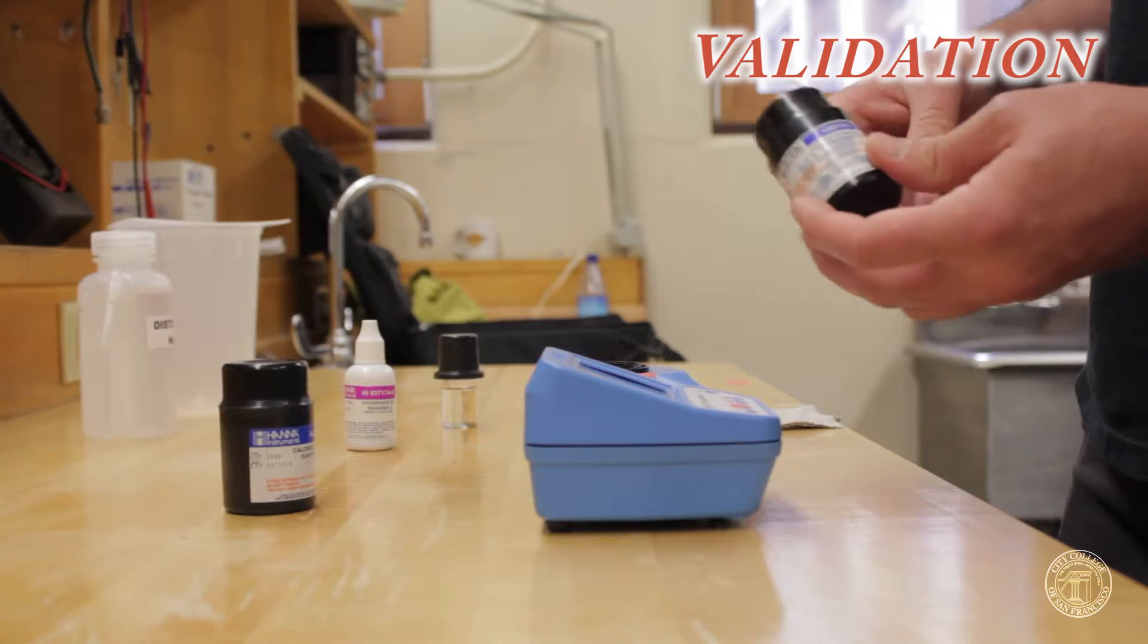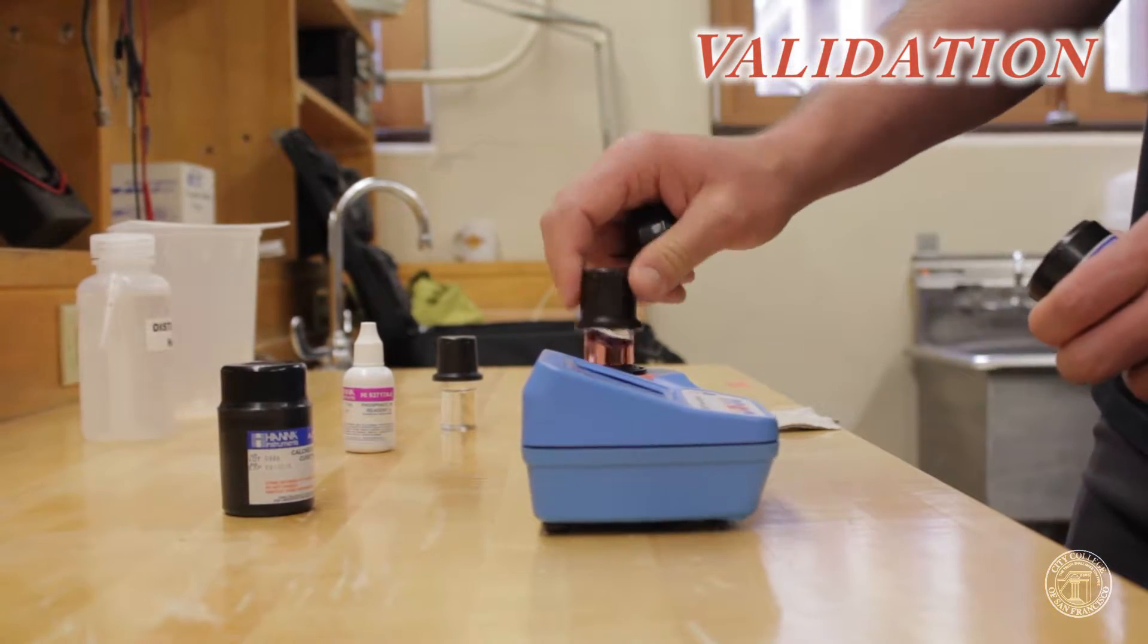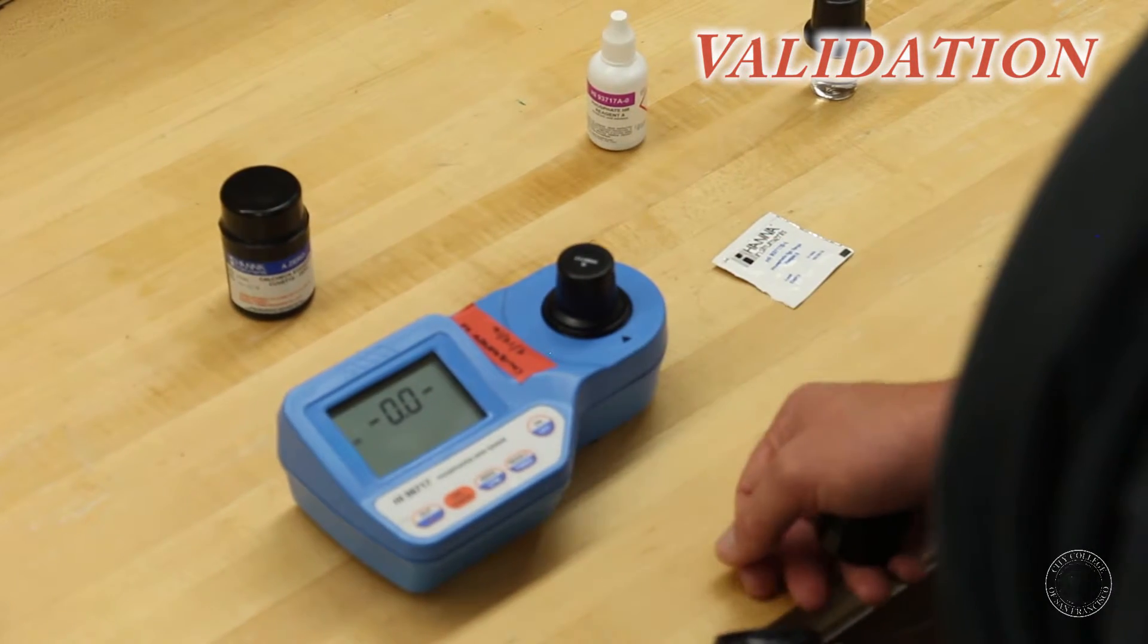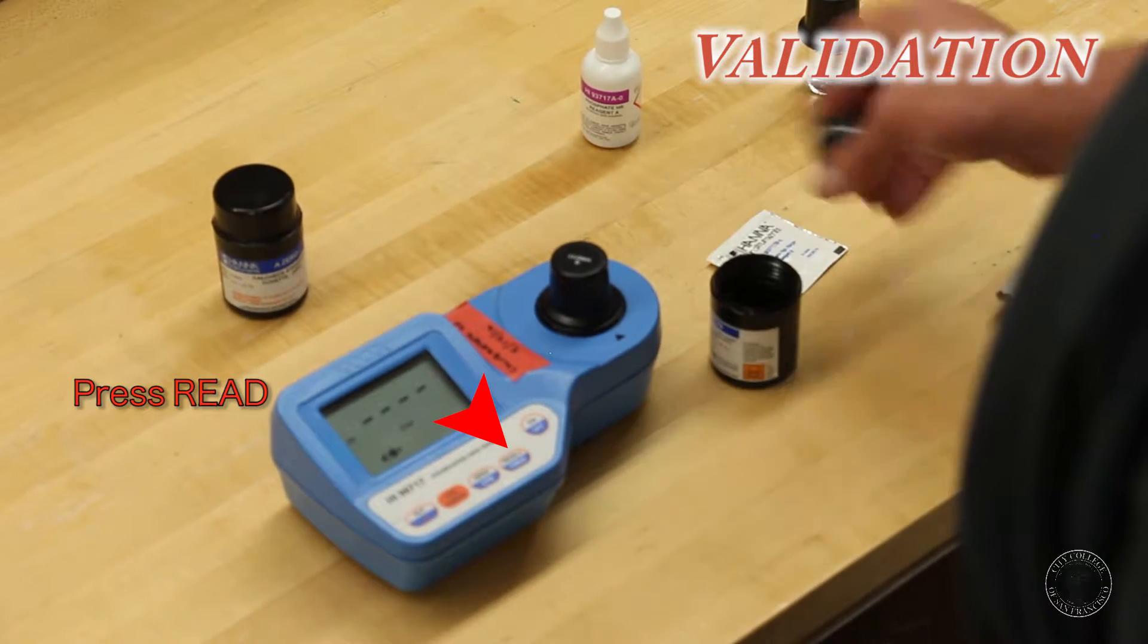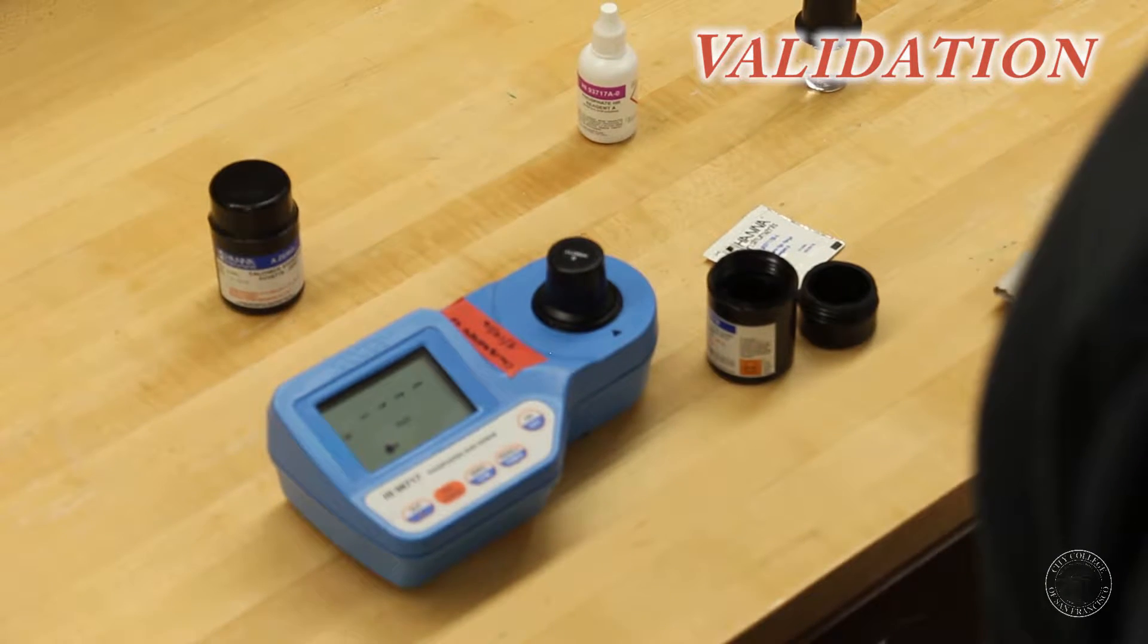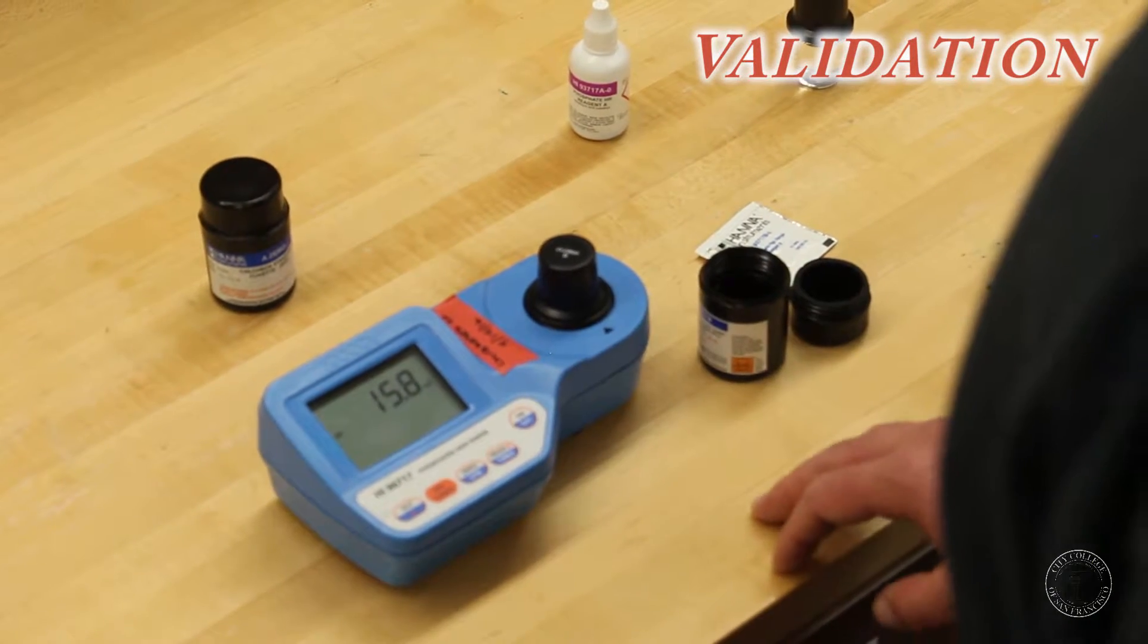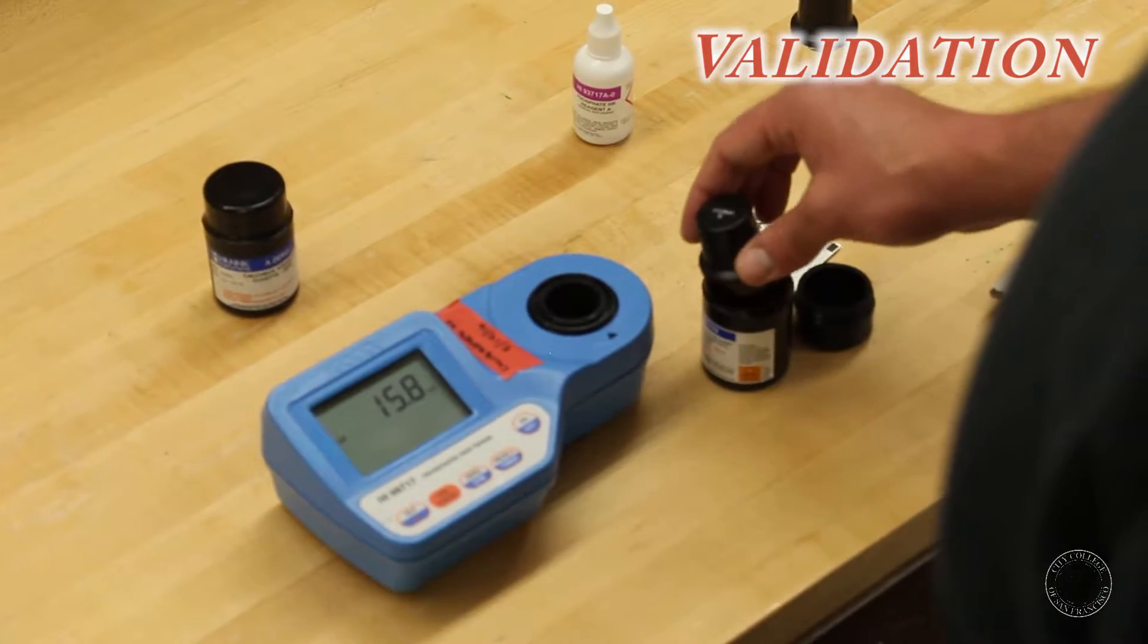Now the lamp is set and the machine reads this as a zero solution. Then using your 15 milligrams per liter standard, you will check to validate that the calibration is correct. Then insert that, make it click, and hit read. And here it's reading at 15.8 milligrams per liter. This variance could be due to the temperature change and the different temperature of the standard.